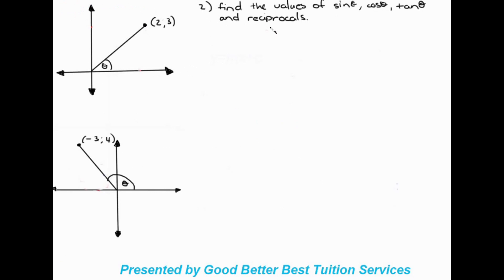In example number two, it says find the values of sin theta, cos theta, tan theta, and the reciprocals. All we're given here is a Cartesian plane with a line going to a point which is two and three. What we have to do is construct a triangle — you can also see we have our theta over here. So let's go ahead and construct this triangle by throwing a line down like this.